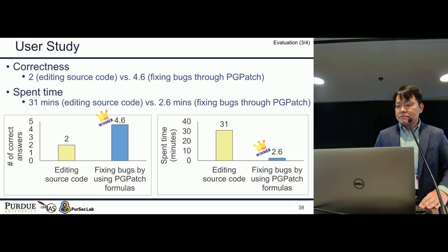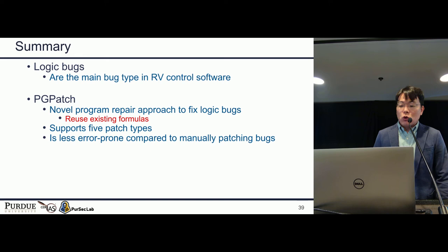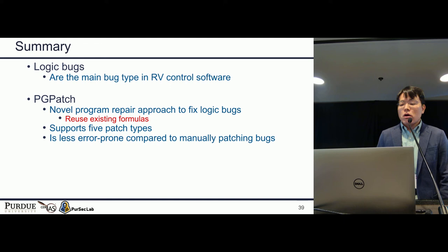In summary: logic bugs are the main bug type in robotic vehicle software. To automatically fix them, we suggest PGPatch, a new program repair tool that reuses existing temporal logic formulas and supports five different patch types. Our user study results show that fixing bugs using PGPatch formulas is less error-prone compared to manual patching. Thank you — I'm happy to take any questions.